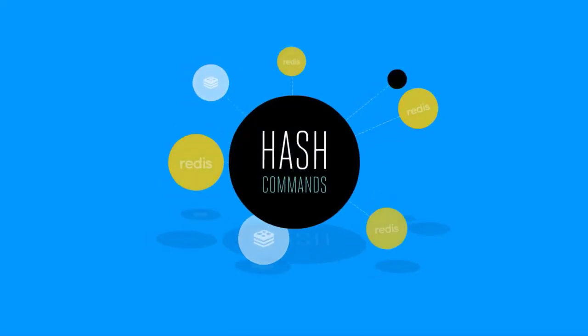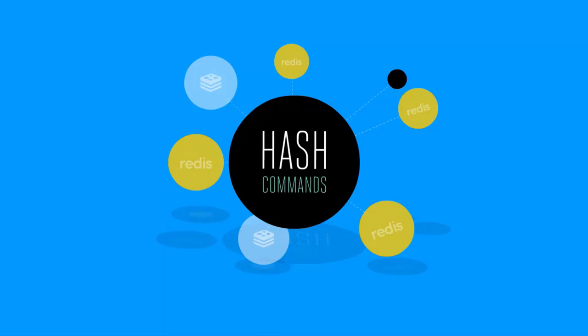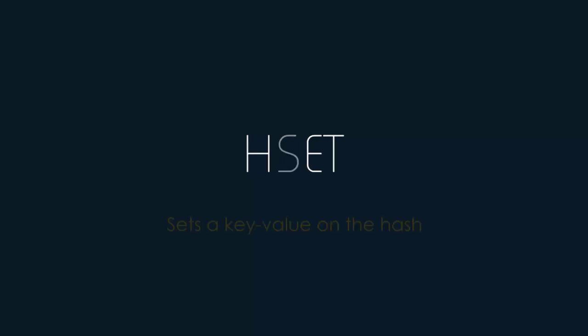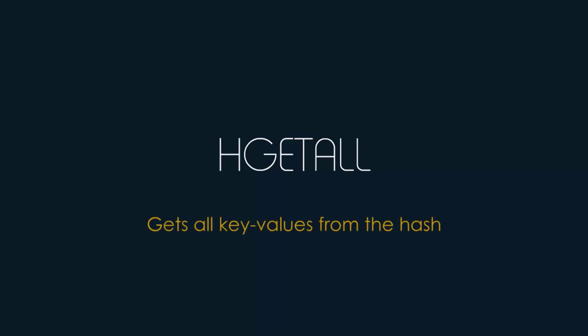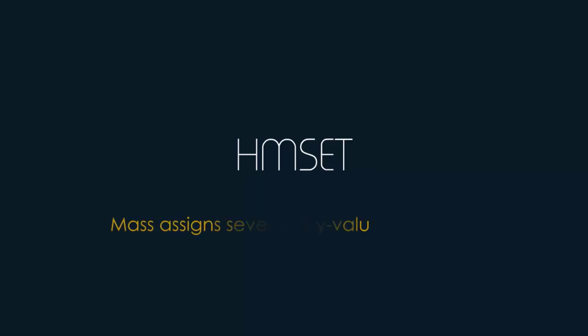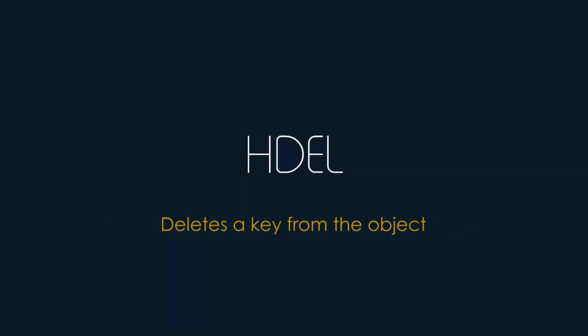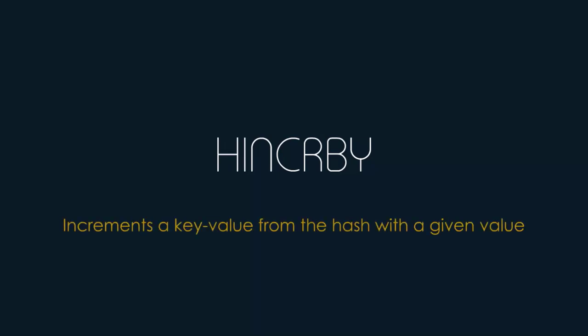Now let's look at hash commands. HSET sets a key-value on the hash; HGET retrieves a key-value; HGETALL retrieves all key-values; HMSET mass-assigns several key-values to a hash; HDEL deletes a key from the object; and HINCRBY increments a hash key's value by a given amount. In the next lecture we'll use these commands with the Predis client in PHP.